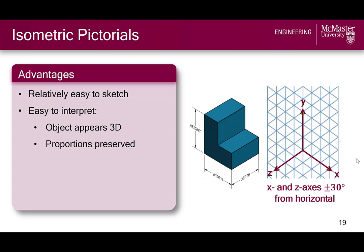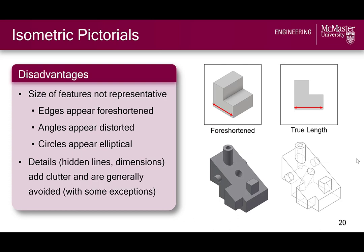Even though isometric pictorials give a clear 3D view of an object with height, width, and depth proportions preserved, there are still some drawbacks, namely foreshortening. Since all axes are tilted away from the projection plane, edges all appear a little shorter than actual — about 82% of their true size. In addition, the tilt of the principal faces means that features like circles appear elliptical and angles appear distorted. For this reason, isometrics are not typically dimensioned as the size of features is not representative of their true size.